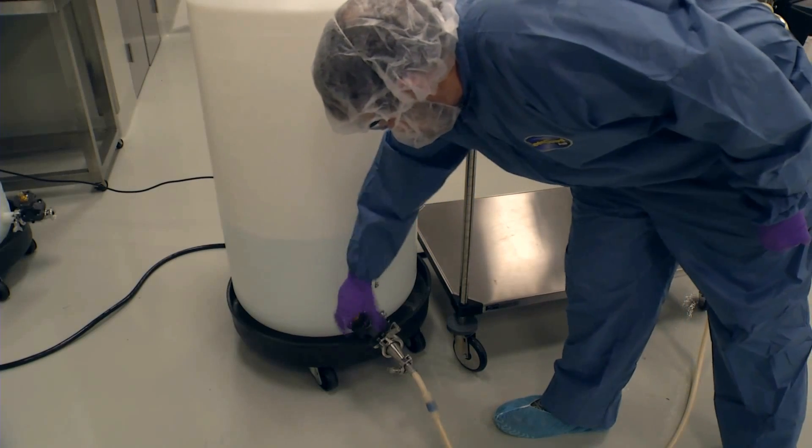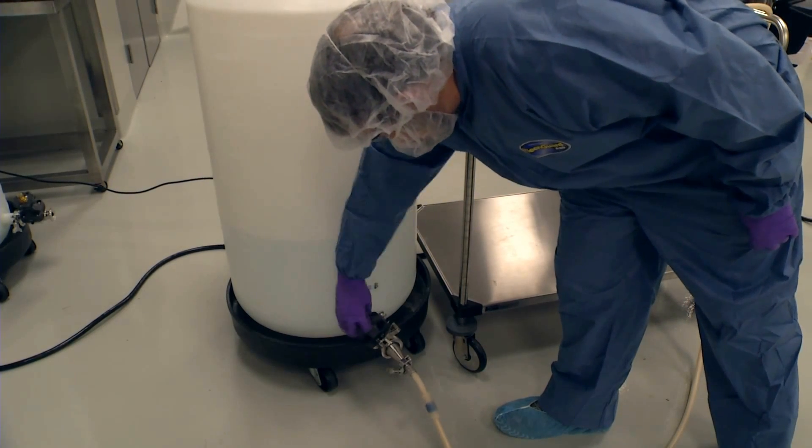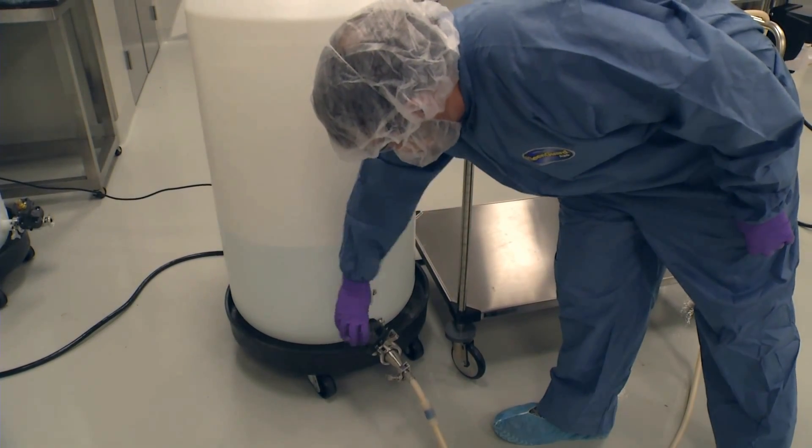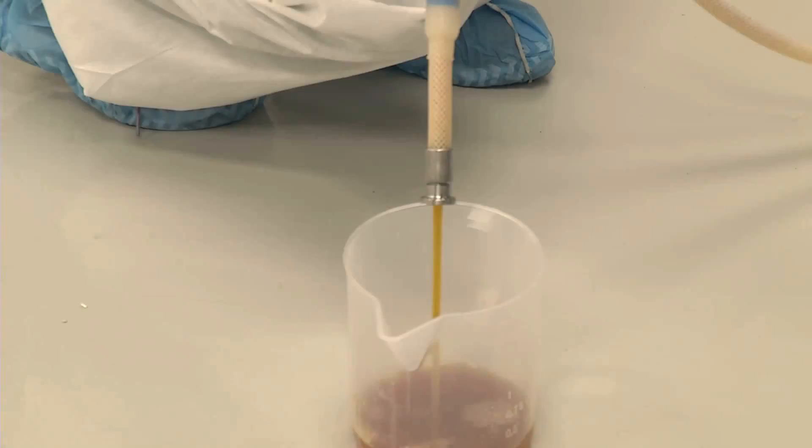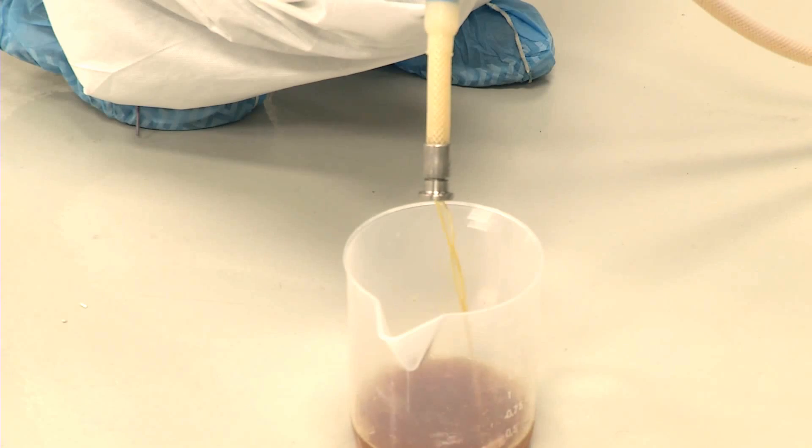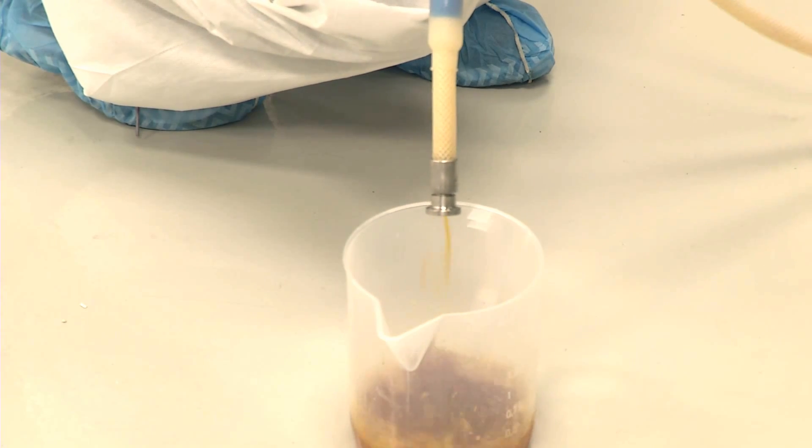The cell paste is suspended in a buffered solution and then run through the centrifuge again. As the clarified liquid leaves the centrifuge this time, it carries many of the contaminants from the fermentation step with it.